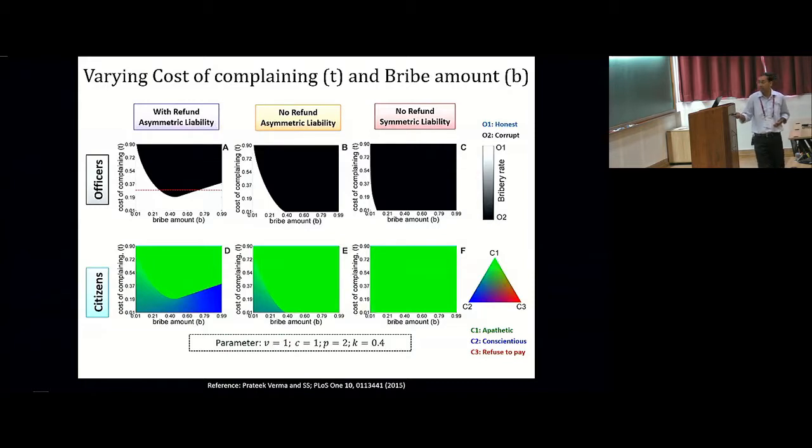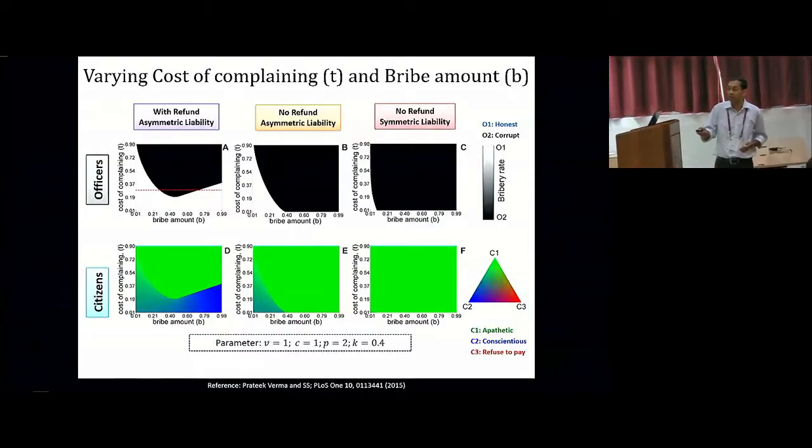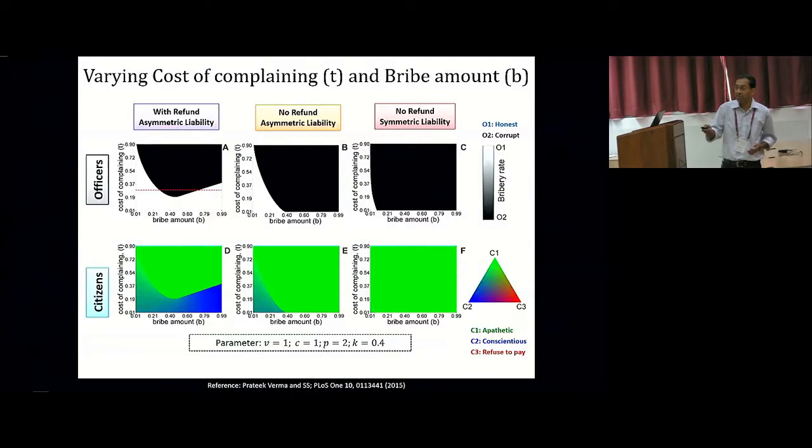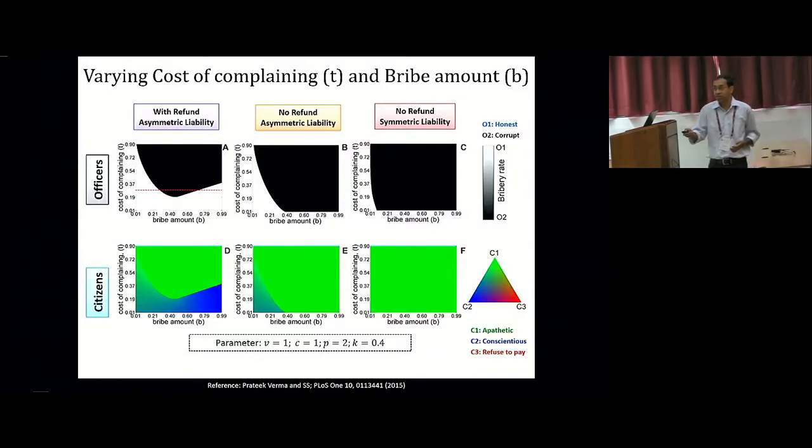In this case, corruption is endemic in society, and it's mostly dominated by corrupt officers, and there's a correlation between the two, because this is mostly apathetic citizens who pay the bribe without complaining. On the other hand, if you have an asymmetric liability scenario, you can have a situation where, depending on the cost of complaining and the bribe amount, there can be regions in parameter space where honest officers can prevail, and this can lead to elimination of corrupt officers from the population.